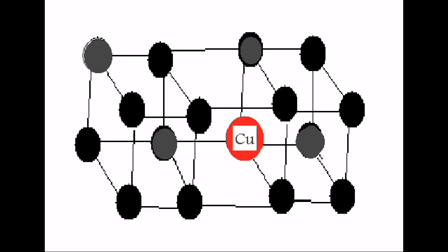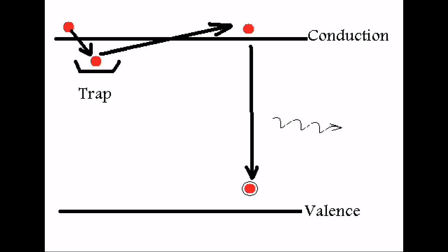It's doped with copper, which is the luminescent center, which causes it to emit green light. This is an energy diagram of the energy states in the host lattice and the luminance center.